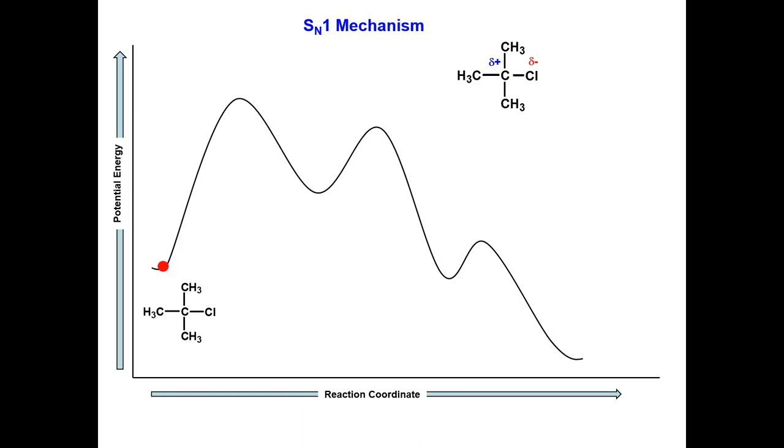The SN1 mechanism. The first step in an SN1 reaction is the formation of a carbocation and a leaving group. The leaving group can be negatively charged or neutral.